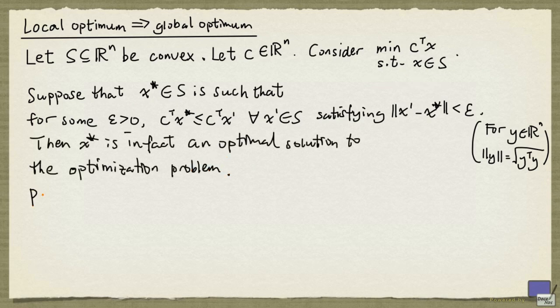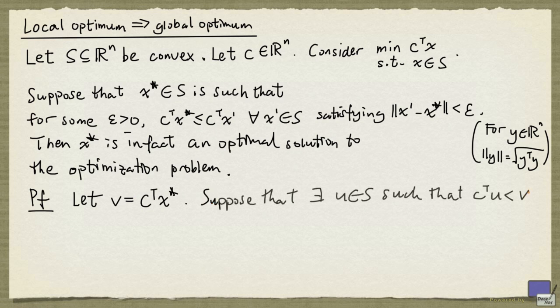We are going to see a proof of this. First, let v denote the objective function value of x star, and suppose that there is an element u in S such that u has objective function value less than v. Now consider z given by 1 minus lambda times x star plus lambda times u, where lambda is between 0 and 1.